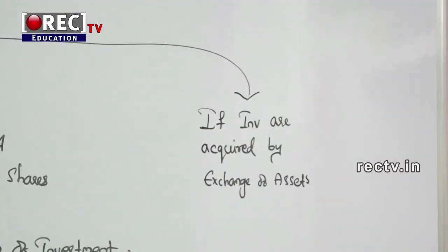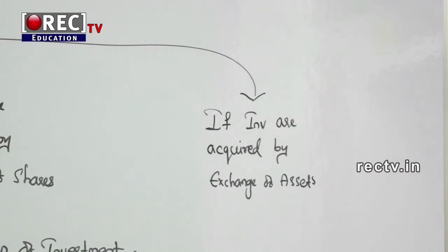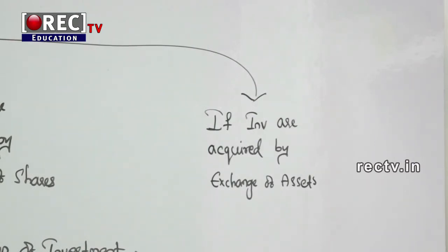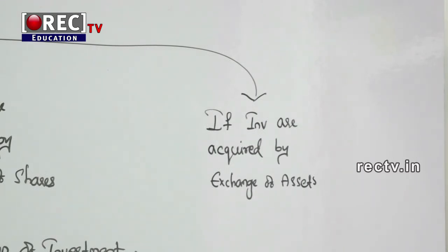Third, if investment is acquired by exchange of assets — for example, you acquire investments from a company and in return give some asset — then you should generally adopt the fair market value of the asset given up, or the fair market value of the investment acquired, whichever is more clearly evident. For initial recognition, investment should be recognized at cost regardless of classification.